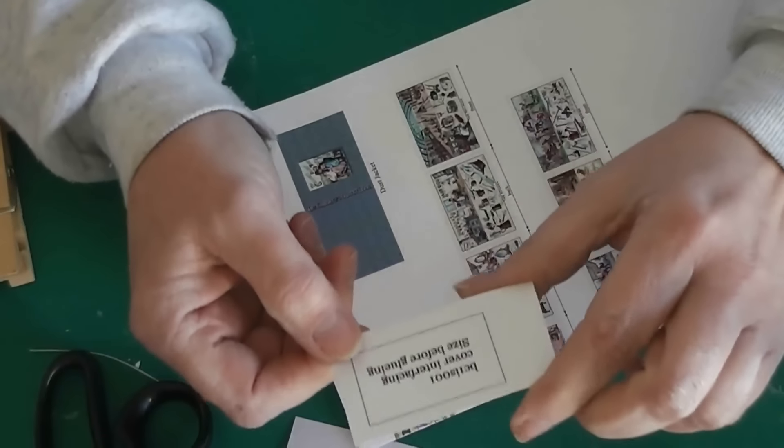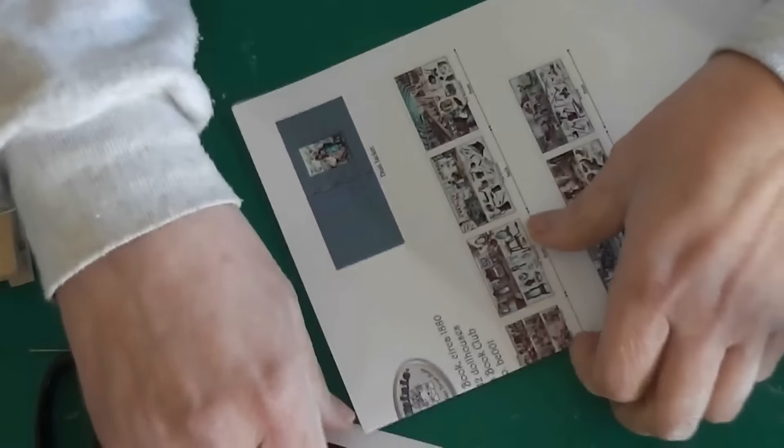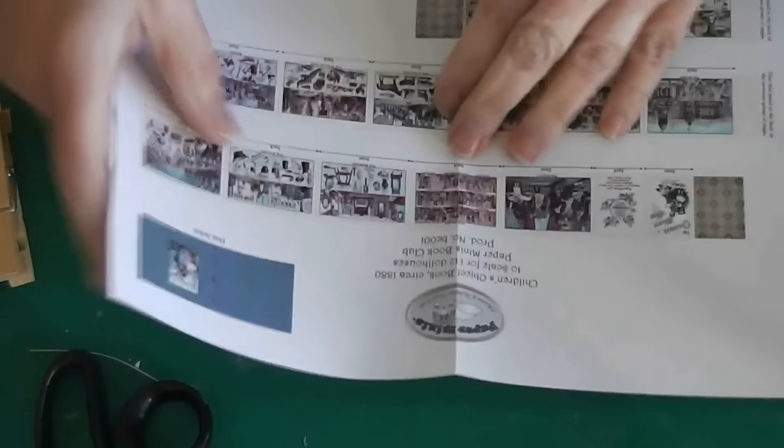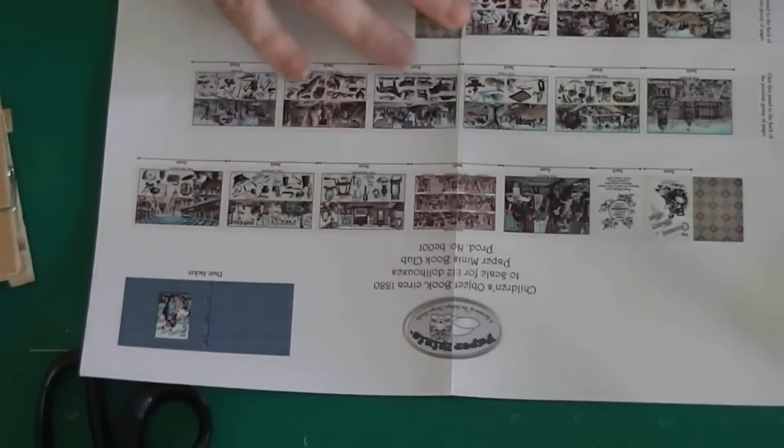We have the cover for the book, this will be the bound cover. We have a dust jacket. We have, I think this must be the case for it. And we've got the cover that we need to size for the book. And then these are pages.